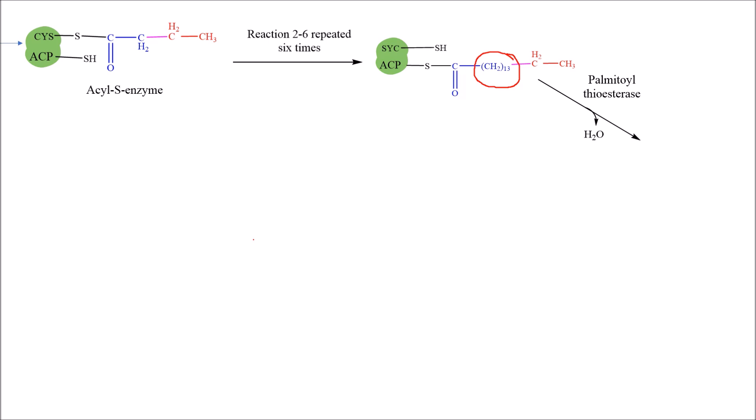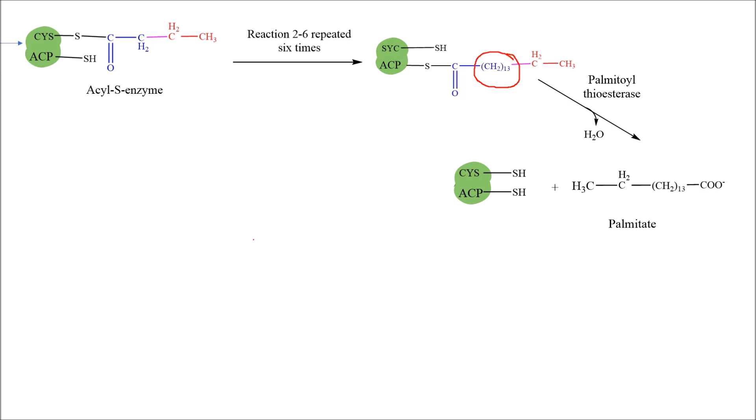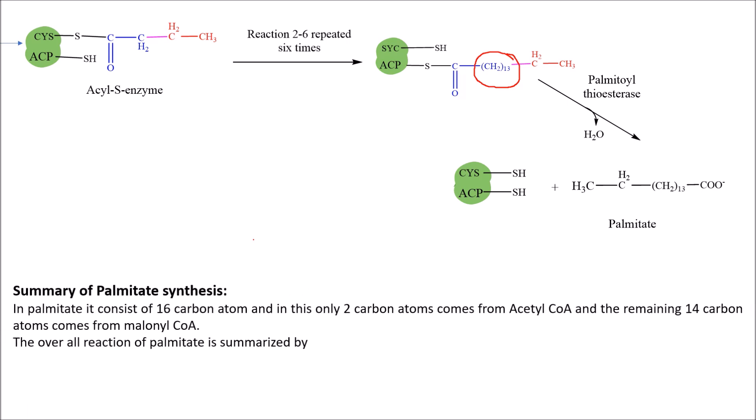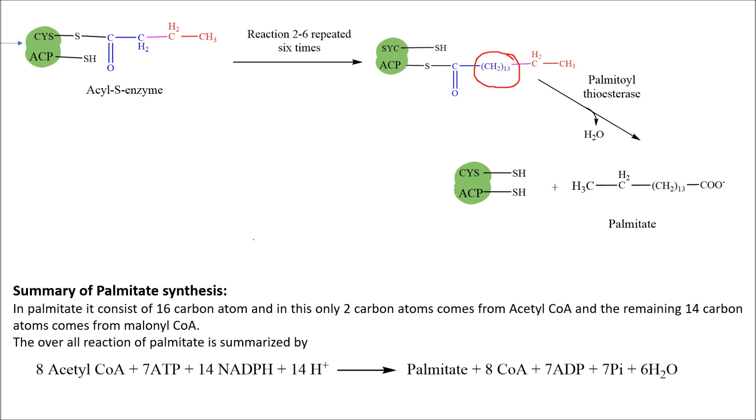Finally, the intermediate compound reacts in the presence of palmitoyl thioesterase, which removes a water molecule and separates palmitate from the intermediate compound. In the summary: palmitate consists of 16 carbon atoms — only 2 come from acetyl coenzyme A and the remaining 14 from malonyl coenzyme A. The overall reaction is: 8 acetyl-CoA + 7 ATP + 14 NADPH + 14 H⁺ → 1 palmitate + 8 CoA + 7 ADP + 7 Pi + 6 H₂O.